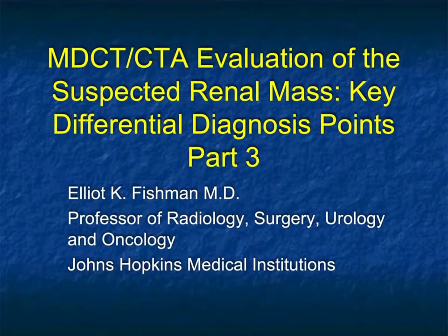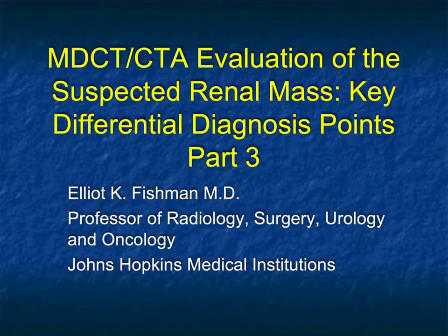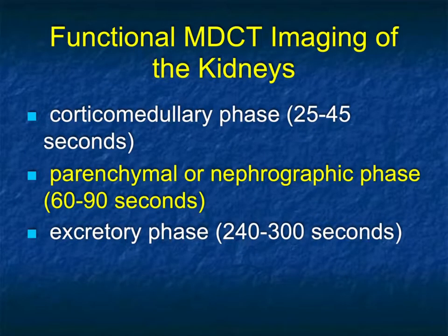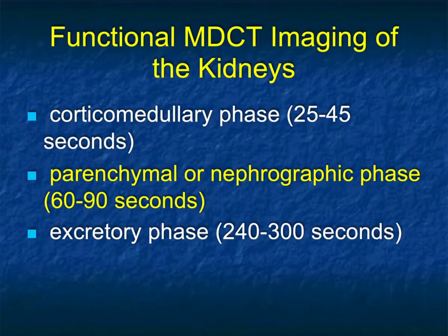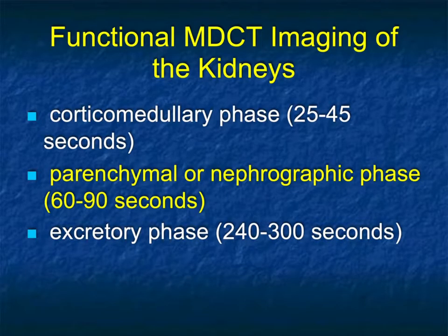Hi, this is Elliot Fishman, and welcome back to Part 3 of CT evaluation of suspected renal masses, looking at key differential diagnosis points. You remember in Part 2 we were talking about cortical medullary, or what I would call arterial phase imaging at 30 seconds. Now let's look at parenchymal or nephrographic phase imaging at about 70 seconds.